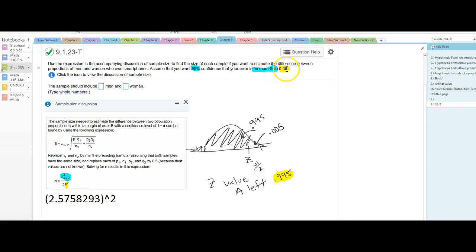And E is no more than 0.06, so then I'm going to divide that by 2 times 0.06 squared. I'm not on my tablet here, so my drawing's a little crazy.